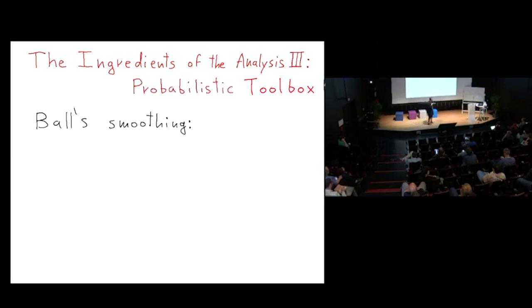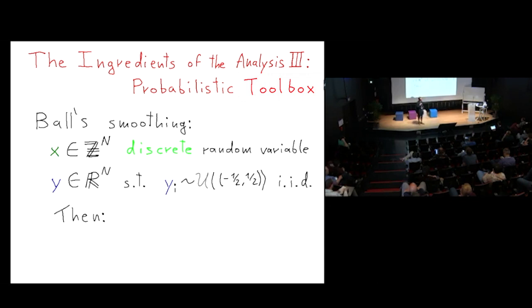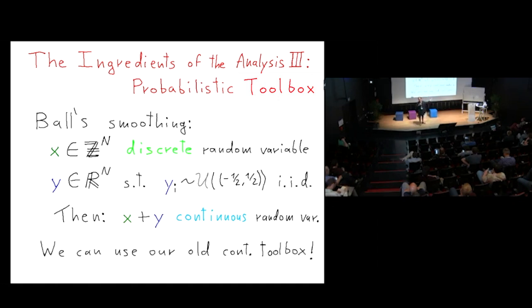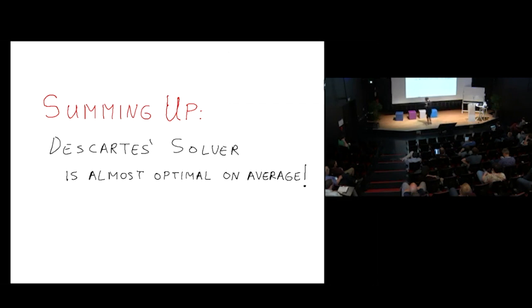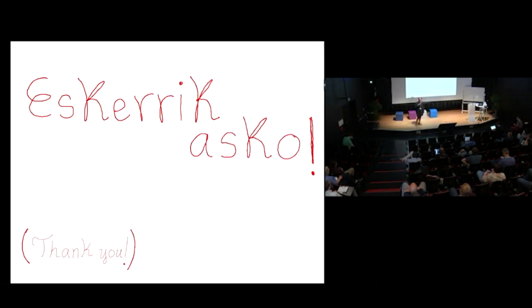The last ingredient is the Berry-Esseen smoothing theorem. We have a discrete random variable; by considering sums, we get a continuous random variable and can use our continuous toolbox to transfer the continuous results back to the discrete case. In summary: the Descartes Solver is almost optimal on average. Thank you for your attention.